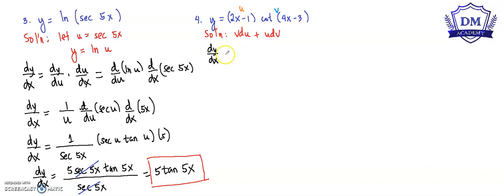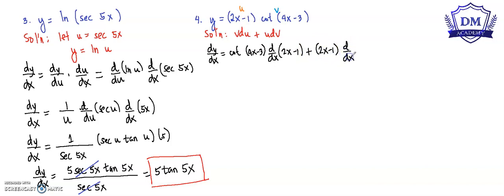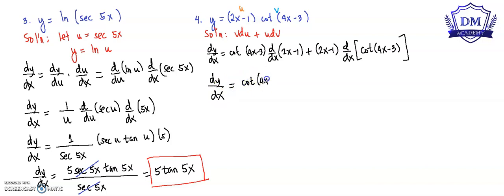Our dy/dx is equal to cotangent of 4x minus 3 times d/dx of 2x minus 1, plus 2x minus 1 times d/dx of cotangent of 4x minus 3. The derivative of y with respect to x is equal to cotangent of 4x minus 3 times 2, plus 2x minus 1.